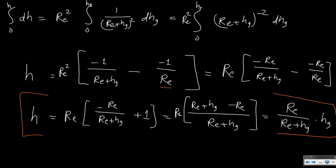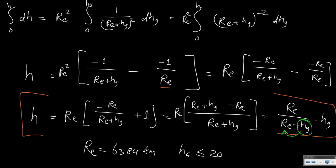What do we learn from this equation? We can see that what really matters is how large hg is compared to the earth radius. The earth radius is approximately 6,378 km. The altitudes at which we fly are always on the order of 20 km, so we can see that the effect is not that large.